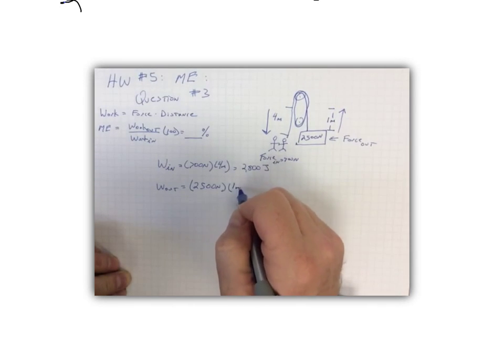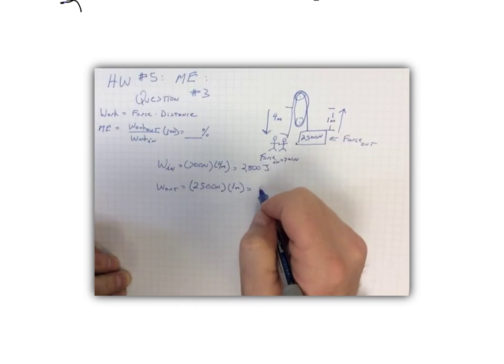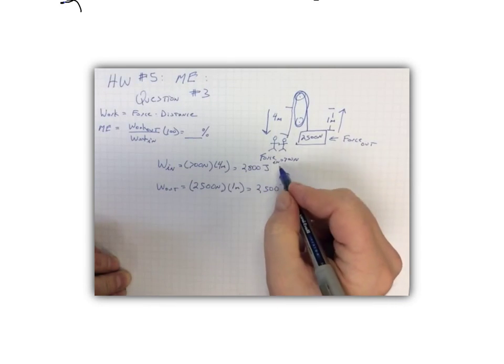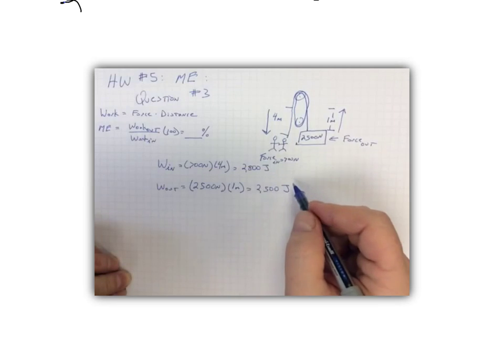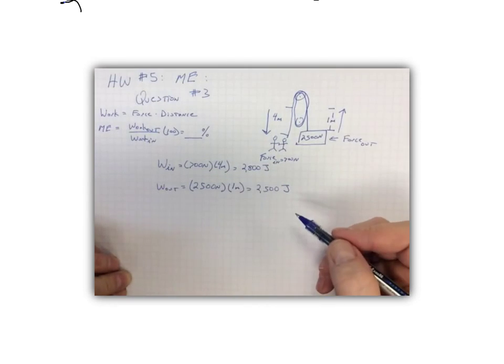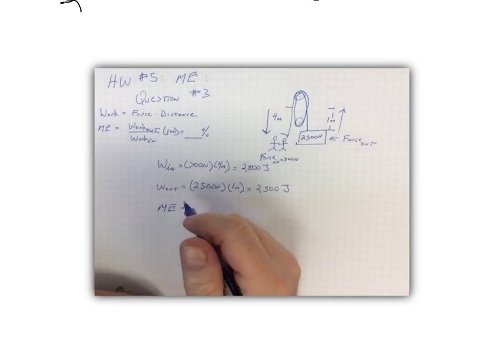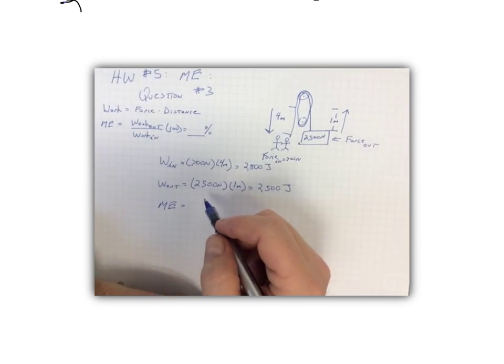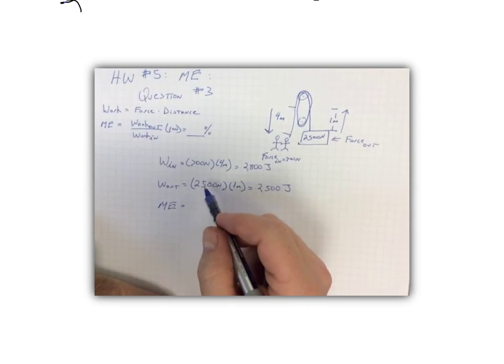So obviously one times 2,500 is 2,500 joules. So there we go, we have our work that goes into the system and our work that's coming out of the system. Last step actually to calculate mechanical efficiency. You can see most of the work is to get your work calculated.